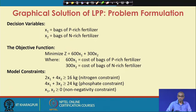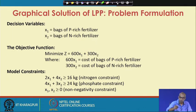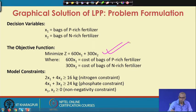Let us define decision variables: x₁ = bags of phosphorus rich fertilizer, x₂ = bags of nitrogen rich fertilizer. Each phosphorus rich fertilizer bag costs 600 rupees, so the cost for x₁ bags is 600x₁. Similarly, cost of x₂ bags of nitrogen rich fertilizer is 300x₂. The total cost is 600x₁ + 300x₂, and we want to minimize this expression — this is our objective function.